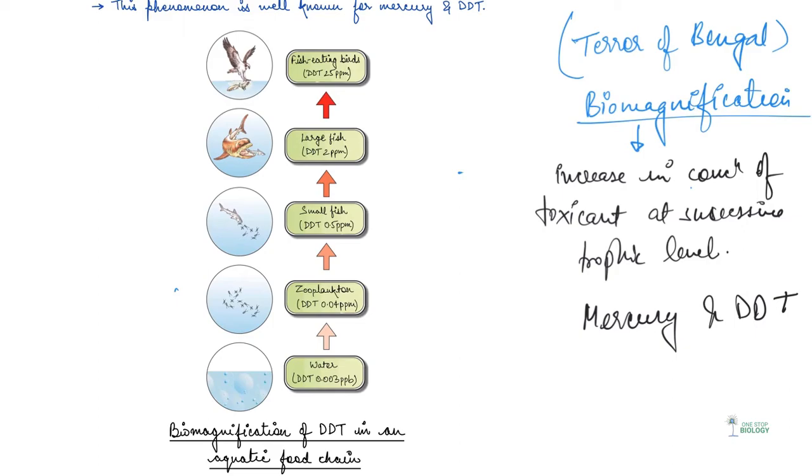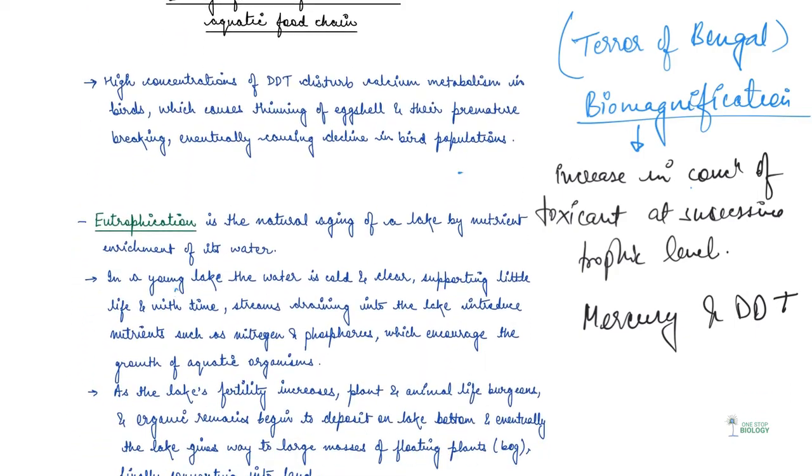So what happens is that high concentration of DDT disturbs the calcium metabolism in birds. And this causes thinning of eggshell and premature breaking of the eggshells. And because of this, there is a decline in bird population. Now, in a similar way, there is another process which is eutrophication.